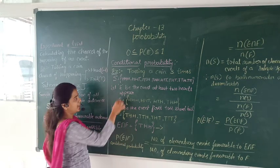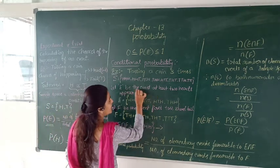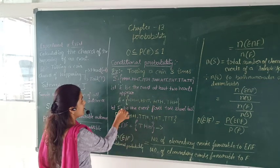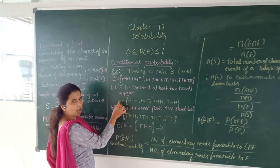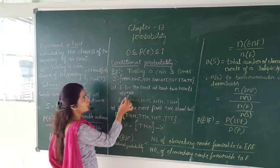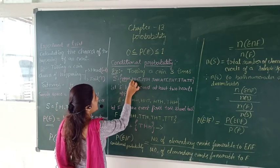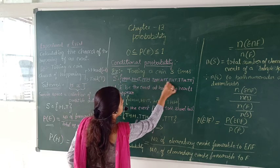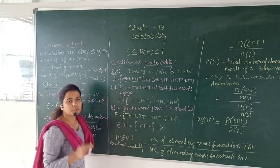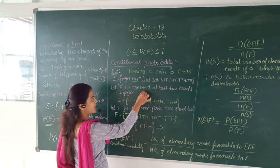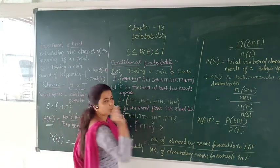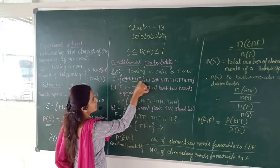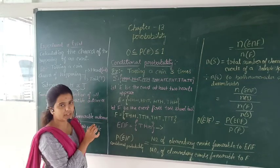Here I have taken event E, which is the event that at least two heads should be up. So I have written event E, which includes the outcomes where at least two heads appear — I found four such outcomes. Here, outcomes with only one head should not be considered, because it requires at least two heads. So I got four outcomes for event E.